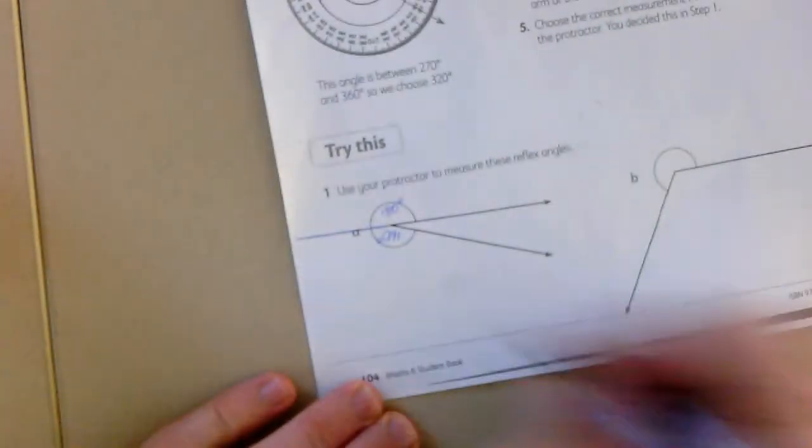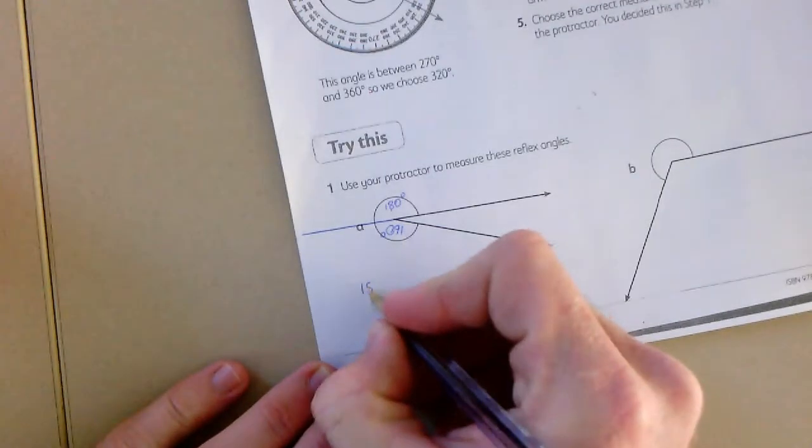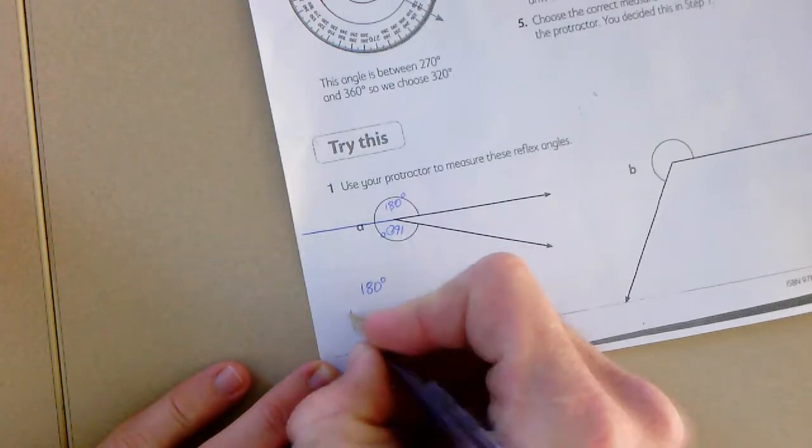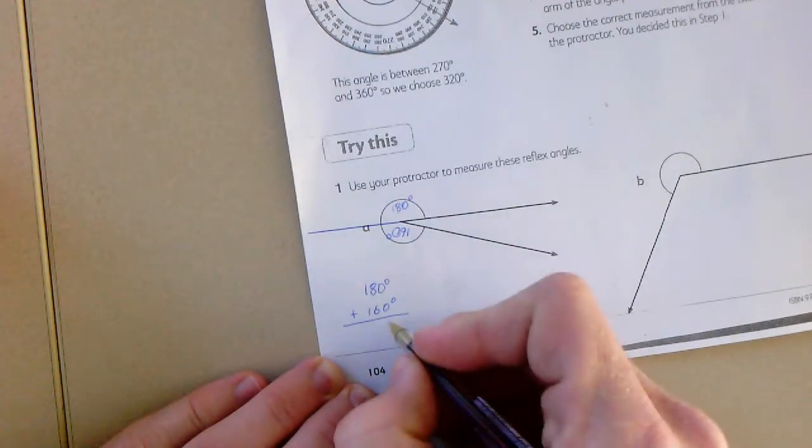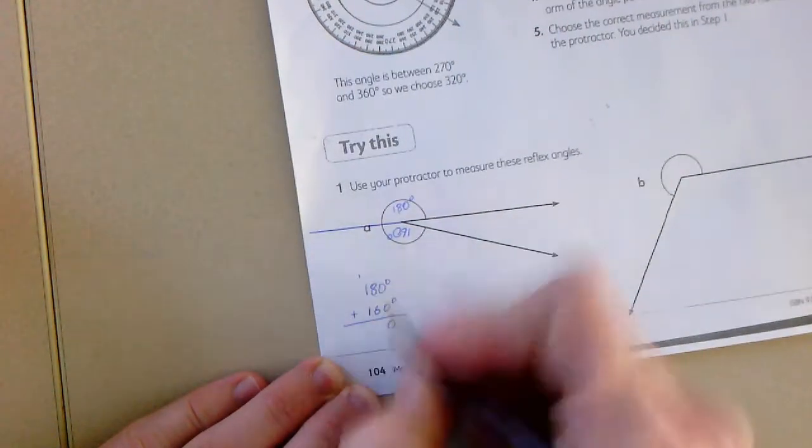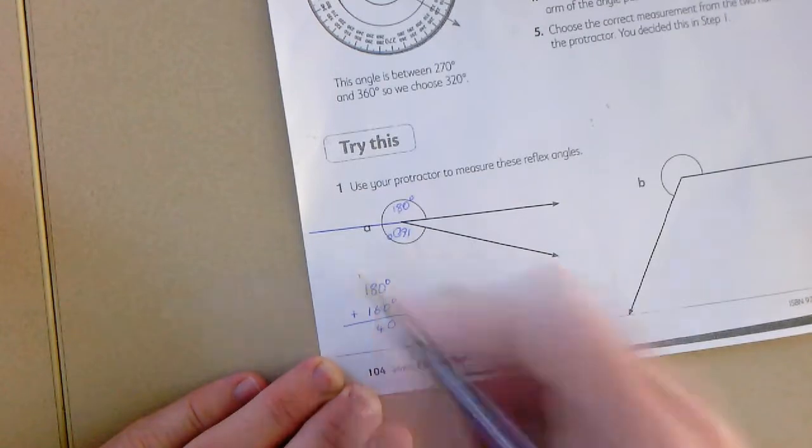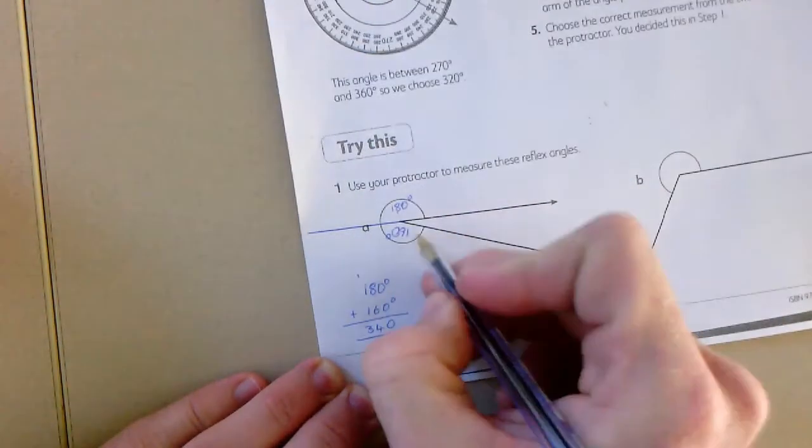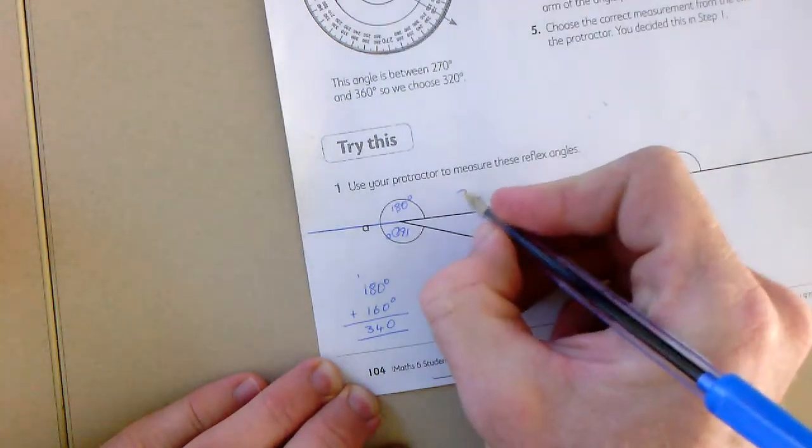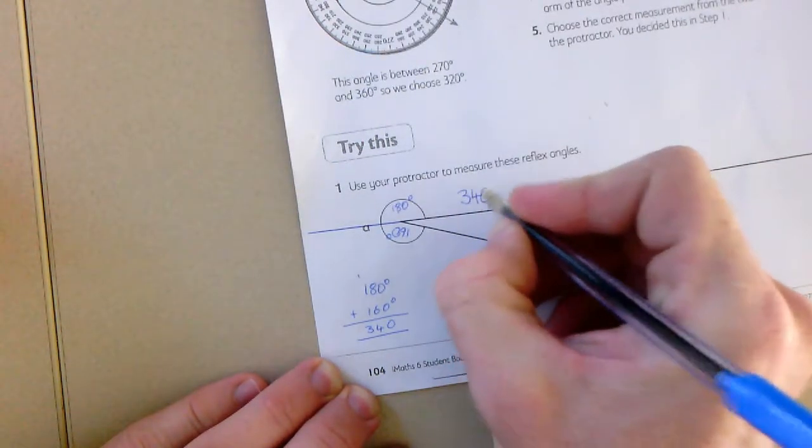Then it's a matter of adding those two pieces together. So 180 degrees plus 160 degrees. 0 and 0 is 0. 8 and 6 are 14. 3 and 1 is 3. So we end up with this reflex angle of 340 degrees.